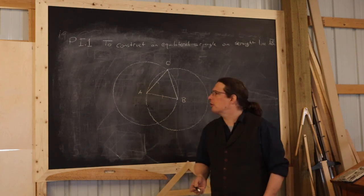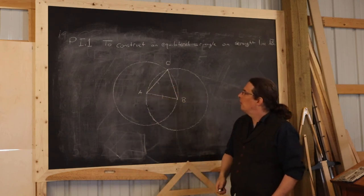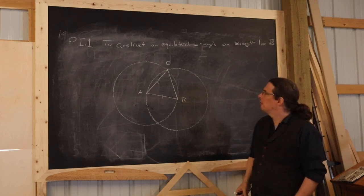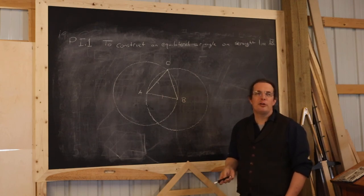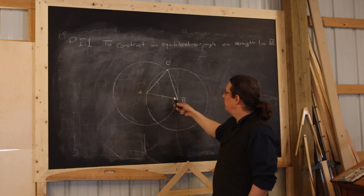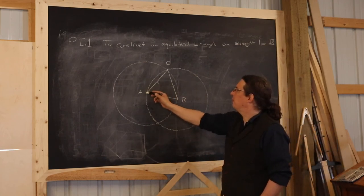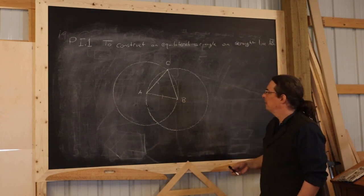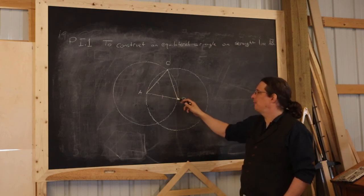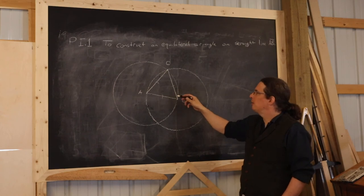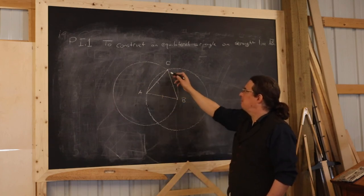Here's how the proof works. We notice that AB and AC are radii of the same circle — this circle right here is centered at point A. And since they're radii of the same circle, by definition of what a circle is, this line segment has to be the same length as this line segment, because all lines that start at the center of a circle and go to its perimeter have to be the same. Likewise, AB is also a radius of the other circle centered at B, but so is BC. So we know that AB and BC have to be equal.